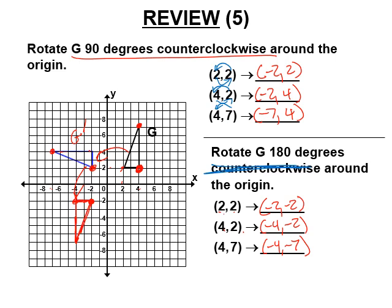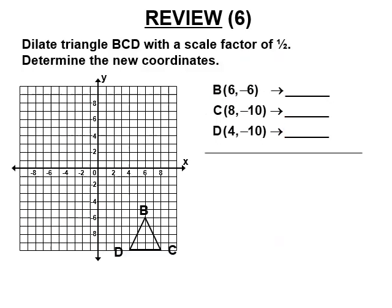Here's a nicer drawing of the 180-degree rotation. We call this G double prime. You could have rotated 90 degrees counterclockwise twice and gotten the same 180-degree rotation.